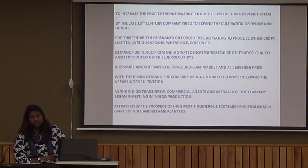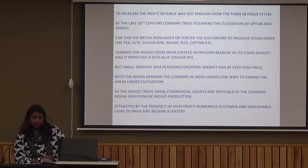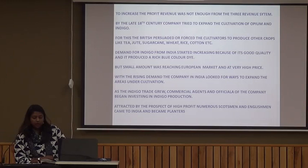Opium was not successful but Indigo was very successful. The British persuaded or forced the cultivators to produce other crops like tea, jute, sugarcane, wheat, rice, cotton, etc. — plantation with two or three crops at one time. Demand for Indigo from India started increasing because of its good quality and rich blue color dye, but only a small amount was reaching the European market at a very high price — demand was more and production was less. With rising demand, the company looked for ways to expand the areas under cultivation. As the Indigo trade grew, commercial agents and officials of the company began investing in Indigo production. Attracted by the prospect of high profit, numerous Scotsmen and Englishmen came to India and became planters.